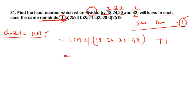The LCM of 18, 24, 30 and 42 is 2520. Add 1 to get 2521. The answer is 2521. Wait — the LCM is stated as giving 252 with option B, so the LCM of 18, 24, 30 and 42 is 2520, plus 1 equals 2521, option B.